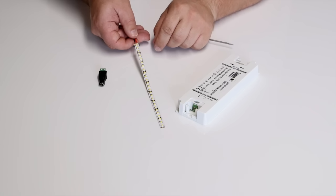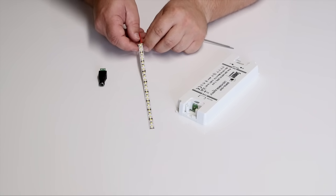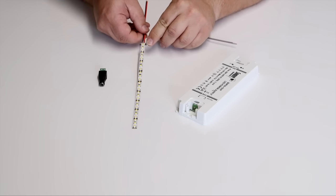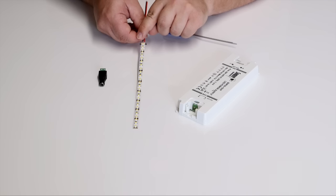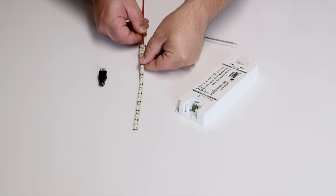To complete the connection push back the little black clip into its locked position by applying equal force to both sides until it meets the body of the connector. This will lock the tape into position. Gently pulling on the strip will show that it is locked into place and a good connection has been made.